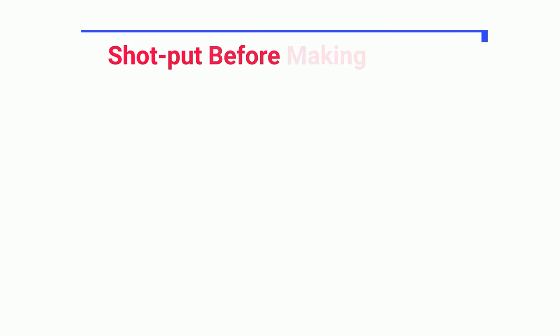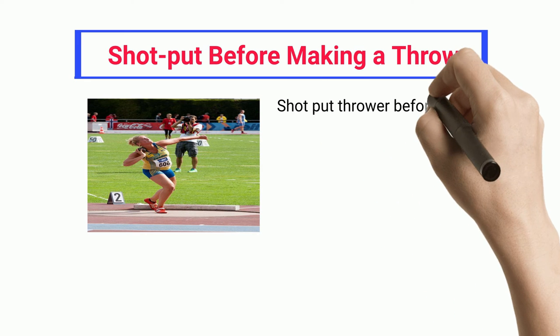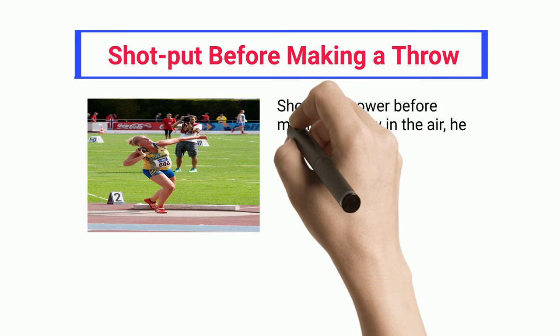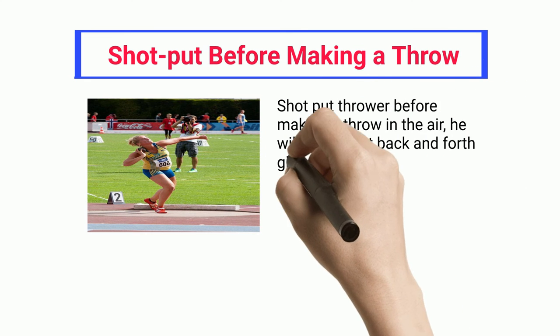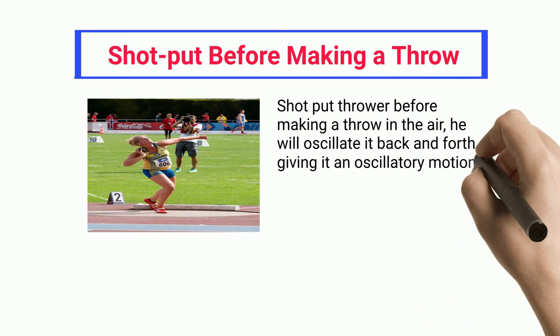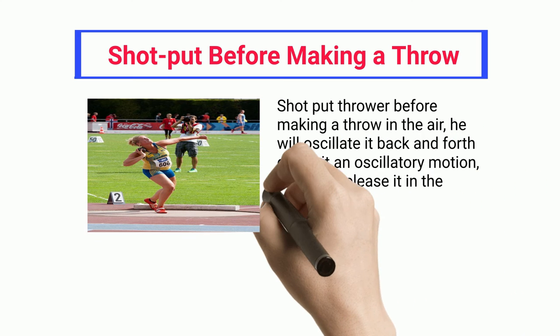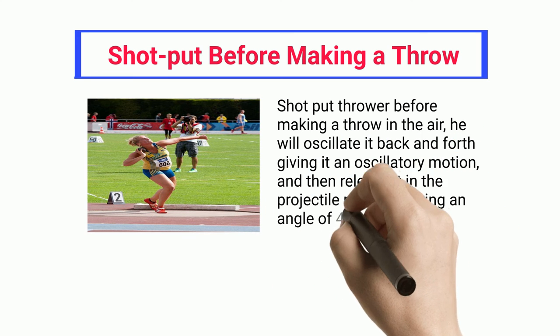Shot Put Before Making A Throw. The shot put thrower, before making a throw in the air, will oscillate it back and forth giving it an oscillatory motion, and then release it in projectile motion making an angle of 45 degrees.